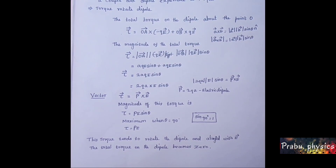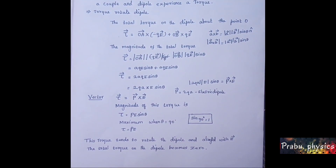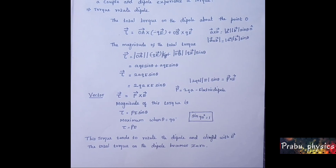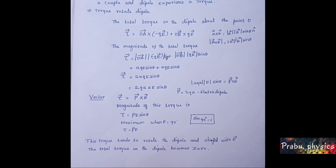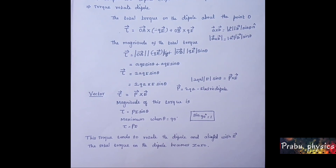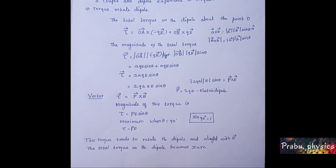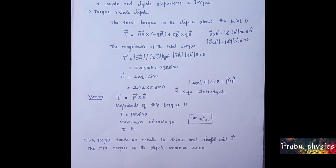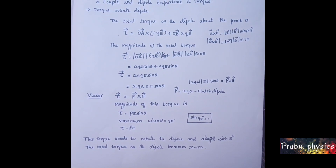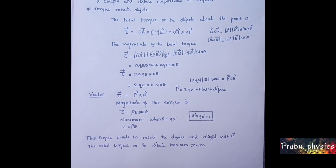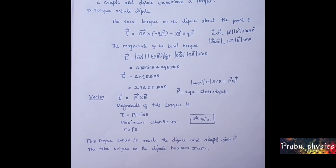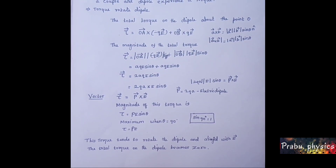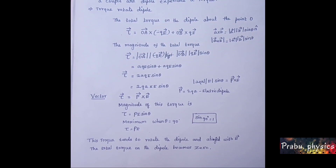The magnitude of the total torque: tau equal to modulus OA vector times qE sin theta plus modulus OB vector times qE sin theta. The modulus of OA vector value is a, modulus qE vector is qE.